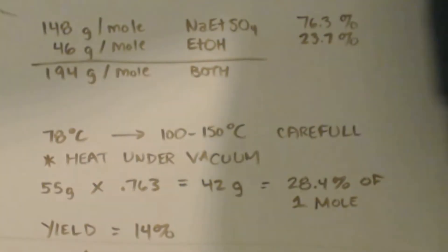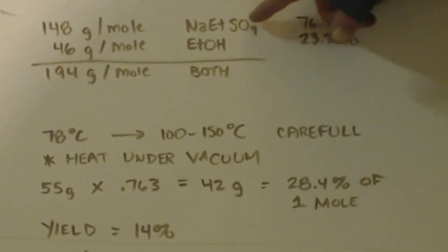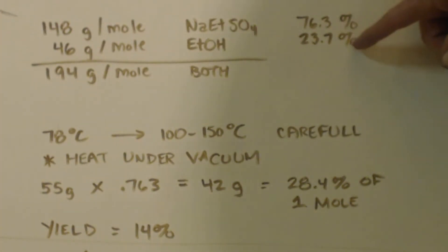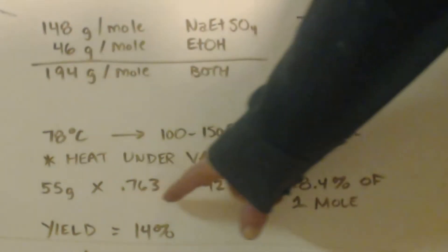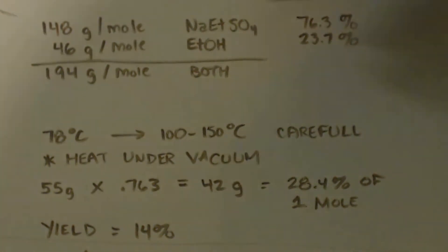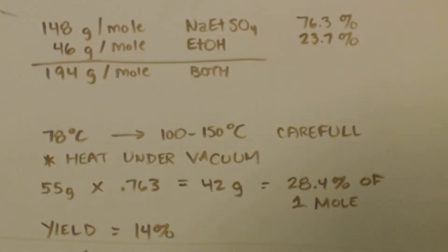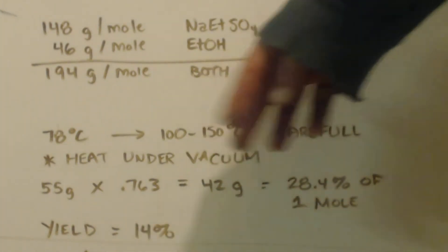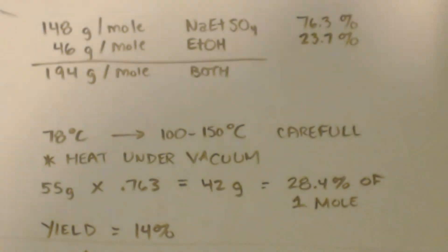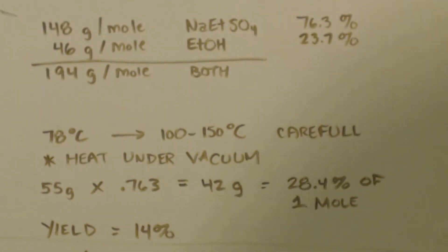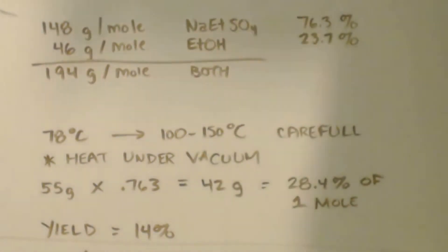Now I got about 55 grams. You can see up here 76.3% is this. If I'm right about it forming this crystallization with the ethanol, almost 24% is that and 76% is that. So I times it by that to see that if there is ethanol crystallization in there, only 42 grams of this is my actual product. The other 13 grams is ethanol. So at 42 grams, that would be 28.4% of one mole. And we started out with two moles of sulfuric acid. Now I even added a little bit more. So we figured it out as starting out at two moles without a 14% yield, which sucks.